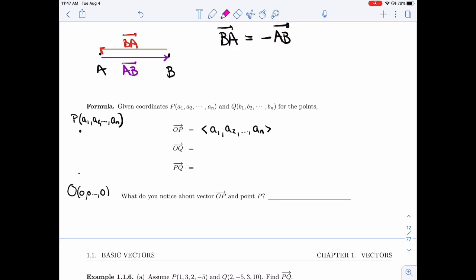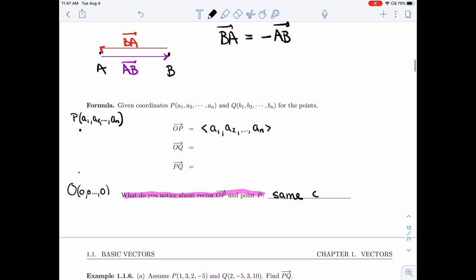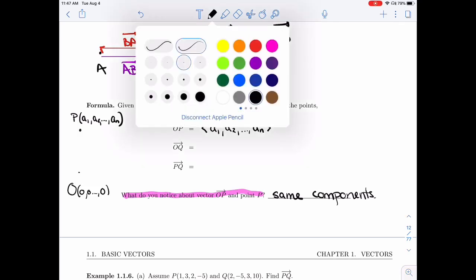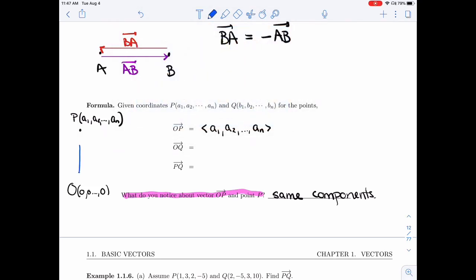So at this point, I want to answer this question at the bottom: What do you notice about the vector OP and the point P? Well, the position vector OP has the same components as the point P. And in some sense, talking about this position vector is a way of taking a point and bringing it into the world of vectors, so we can do operations and products and all of this on it.